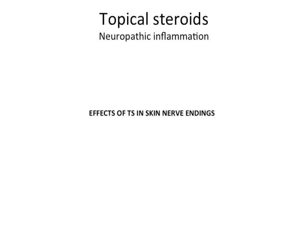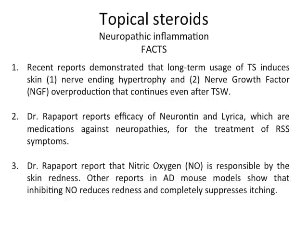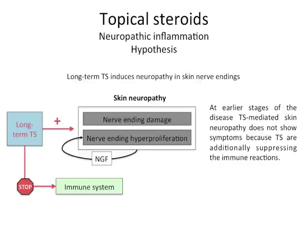Effects of topical steroids in skin nerve endings. Recent reports demonstrated that long-term usage of topical steroids induces skin nerve endings hypertrophy and nerve growth factor over-production, which continues even after topical steroid withdrawal. Dr. Rappaport reports the efficacy of Neurontin and Lyrica, which are medications against neuropathies, for the treatment of red skin symptoms. The same doctor reported that nitric oxide is responsible for the red skin. Other reports in atopic dermatitis mouse models showed that inhibition of nitric oxide reduces redness and completely suppressed itching. One hypothesis says that long-term topical steroids induce neuropathy in skin nerve endings, resulting in nerve endings damage and nerve endings hyperproliferation through the production of NGF.